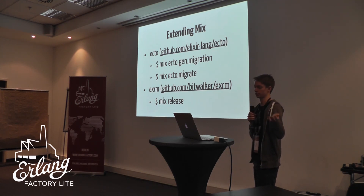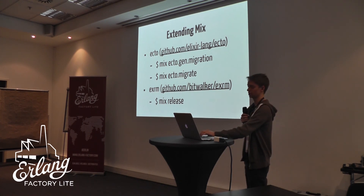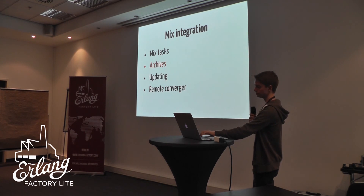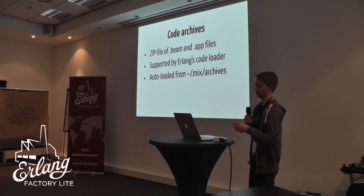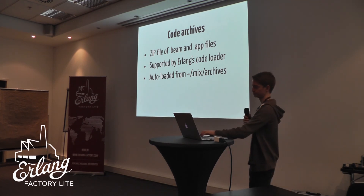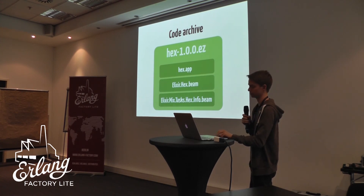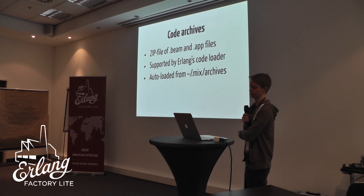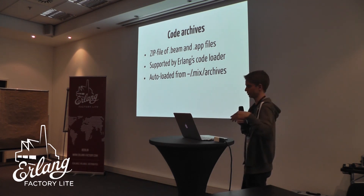As you saw earlier, there are tasks for publishing, updating and so on. But Hex is not a dependency like Ecto and ExRM — it's actually installed as a code archive. A code archive is basically just a zip file containing Beam and App files. This is not an Elixir-specific feature; it's actually supported by the Erlang code loader. So this would be a zip file containing the Hex.app file and the Beam files for all the modules. The current archives are loaded from your home directory, so Hex would install into .mix/archives. The tasks are available from there.